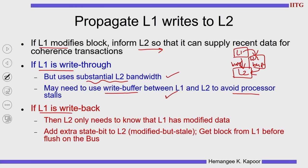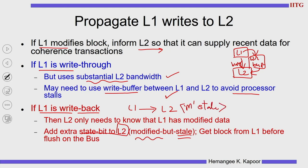The second option is a write-back L1. If L1 is write-back, L1 cannot tell L2 that it has changed the block by default — we need to ensure this explicitly. L1 has to purposely tell L2 that it has changed the block, without sending the data. In write-through, the new data goes to L2; in write-back, only the information of the change goes to L2, and the data does not. We can add one extra state bit to L2: modified-stale state. L2 says it has the data in modified but stale state, because the correct data is with L1. Any time a request comes for this block, L2 has to speak to L1 to get the correct data.